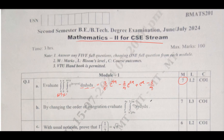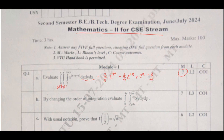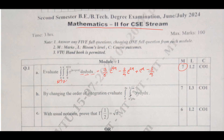Moving to question number 1b: by changing the order of integration, you need to evaluate the integral from 0 to 4a, and from x²/4a to 2√(ax) of xy dy dx. The solution is 64a⁴ divided by 3. If you got this answer, you will get 7 out of 7.